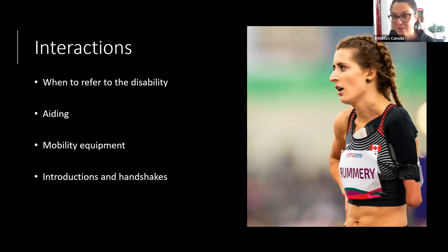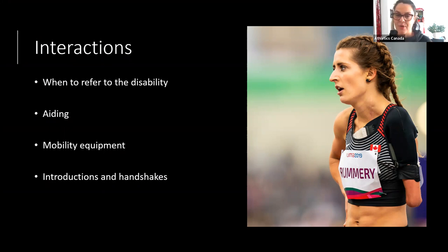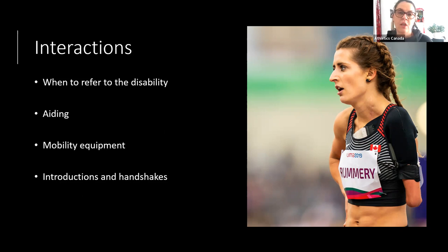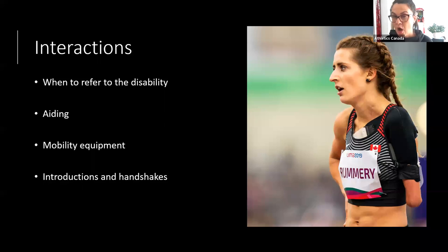Moving on to interactions: if you have not been around people with disabilities much, it might be uncomfortable at first. For example, if I was trying to describe Amanda to a friend, I wouldn't refer to her disability at all — I'd describe her braids, her earrings, her Canada jersey with 'Romery' on the back. Her disability isn't relevant to that description. Whereas if a coach needs to arrange a ramp at a venue because an athlete uses a wheelchair, that context is relevant and appropriate.